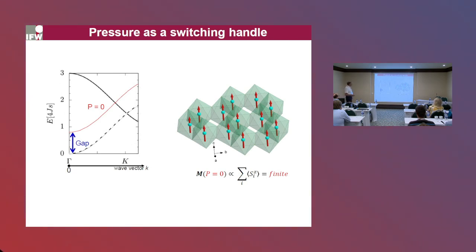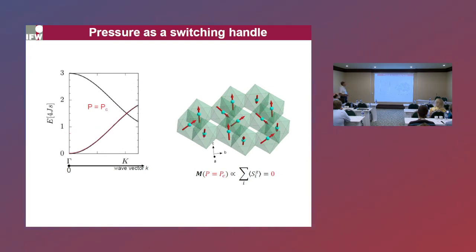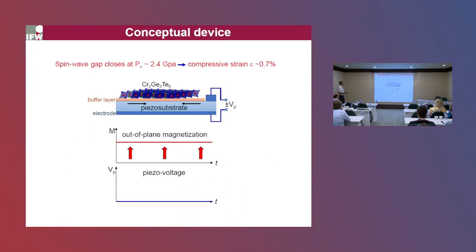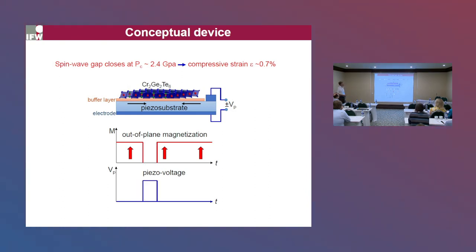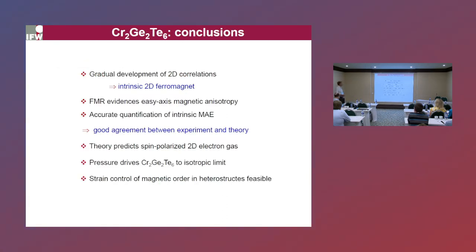So we have a handle: in the absence of applied pressure, we have a gap and potentially, in the single-layer limit, still ferromagnetic order. But as soon as we apply pressure, we close the gap and the order is destroyed. One can think of an interesting conceptual device where a layer of chromium germanium telluride is placed on a piezoelectric substrate. When the substrate is unstrained, one has a time-independent out-of-plane magnetization of the single layer. As soon as a voltage is applied to the substrate, the layer is contracted, and the magnetization is lost. This is an interesting potential functionality: integrating this kind of bilayer into a spintronic device to generate and manipulate spin-dependent currents.